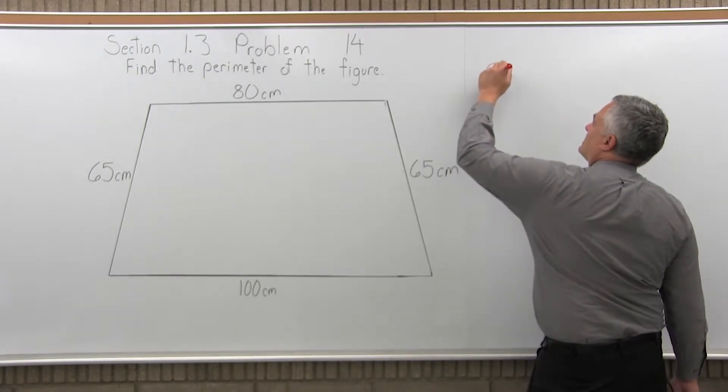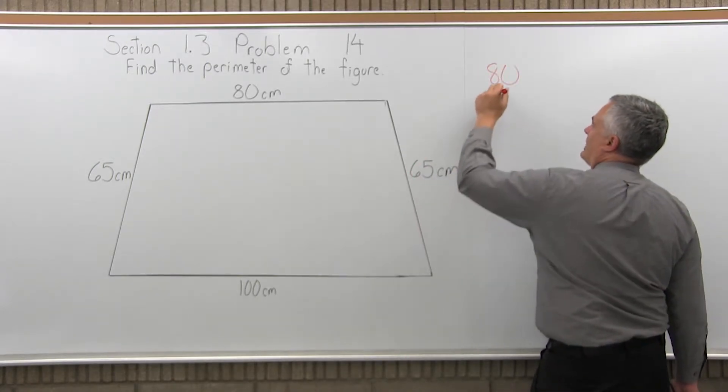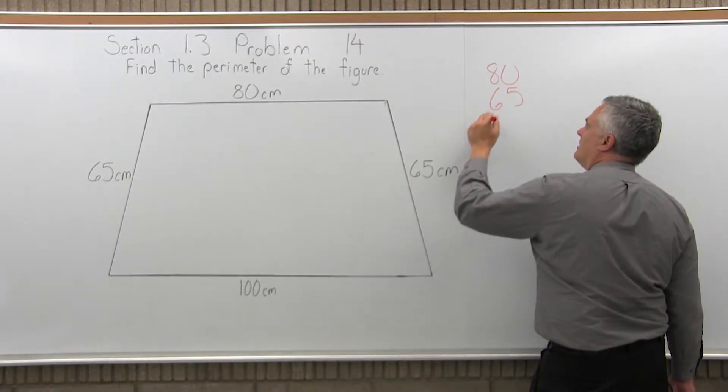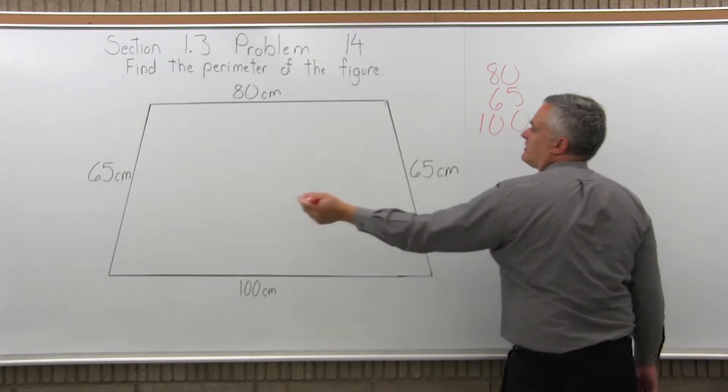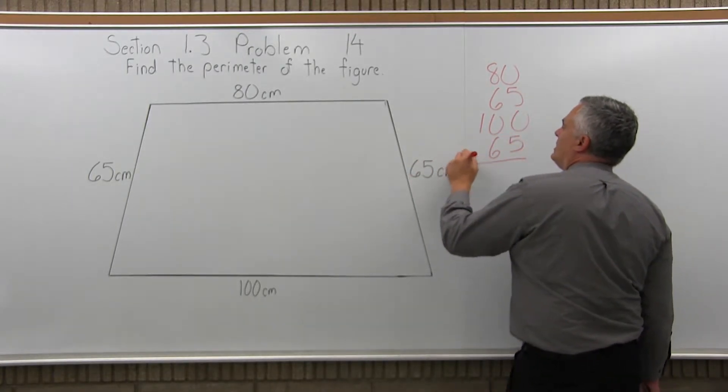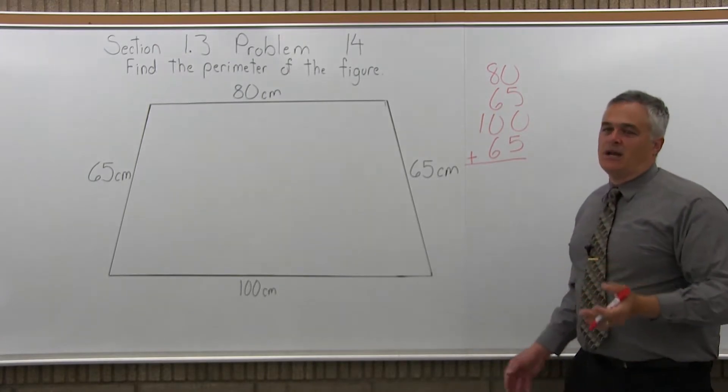So, the length of the top is 80, the length of the right edge is 65, the length of the bottom is 100, and the length of the left edge is another 65, and that's going to be all the edges, and we'll just add them up, and you can really list the number in any order.